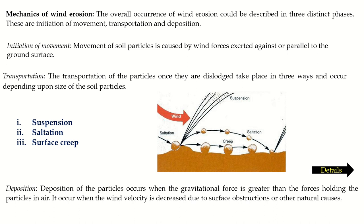The overall occurrence of wind erosion can be described in three phases: initial movement (detachment of soil particles by high wind velocity), transportation of detached particles in different forms, and deposition where wind velocity reduces. The initial movement of soil particles takes place by wind force on the ground surface. This minimum wind force required to move soil particles is called the threshold velocity.